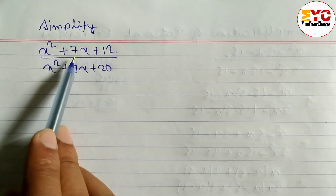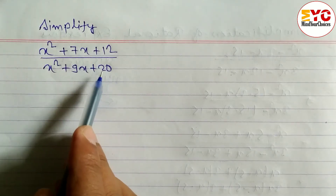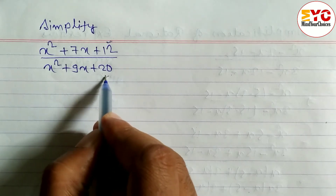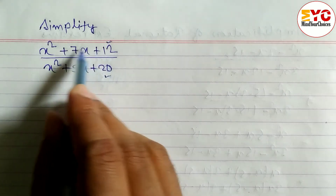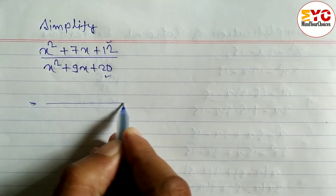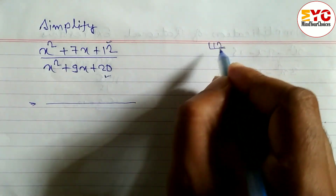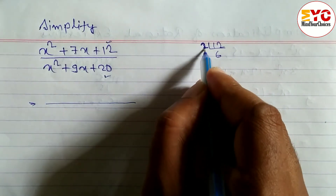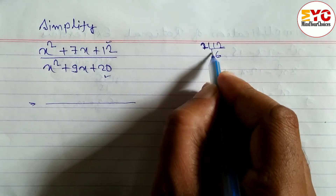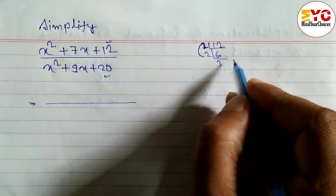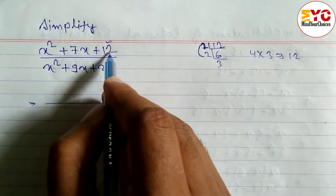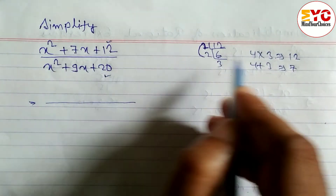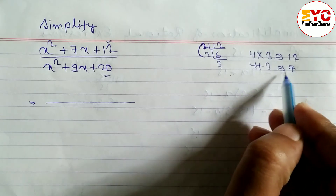You can see here we have a new question: x squared plus 7x plus 12 by x squared plus 9x plus 20. We have to find factors whose multiplication is 12 and addition is 7. Let's check: 2×6=12, 6+2=8 — not 7. Try again: 4×3=12, and 4+3=7. Yes, that works.